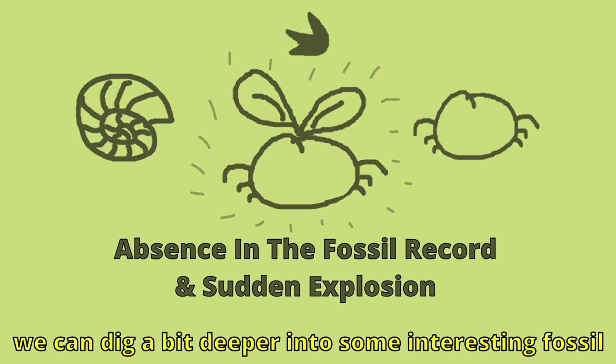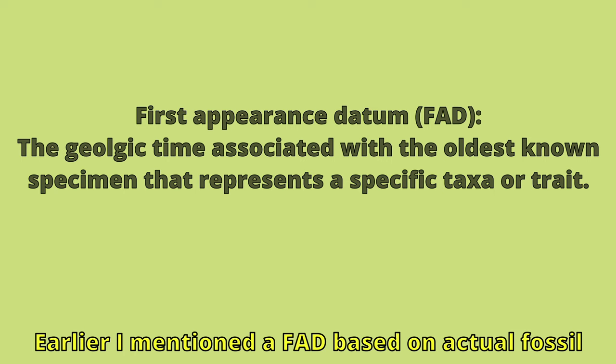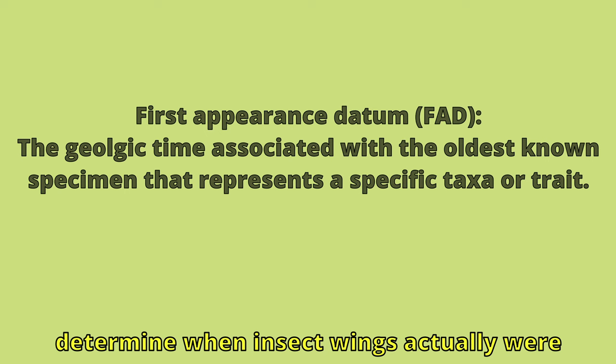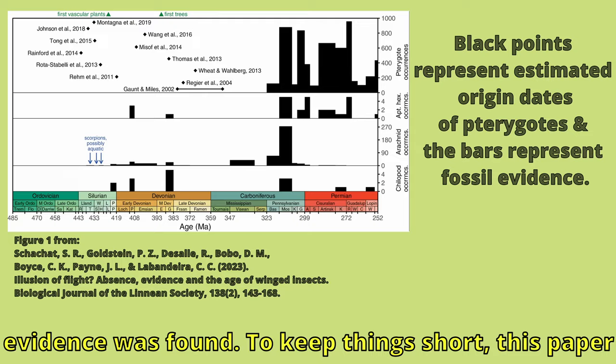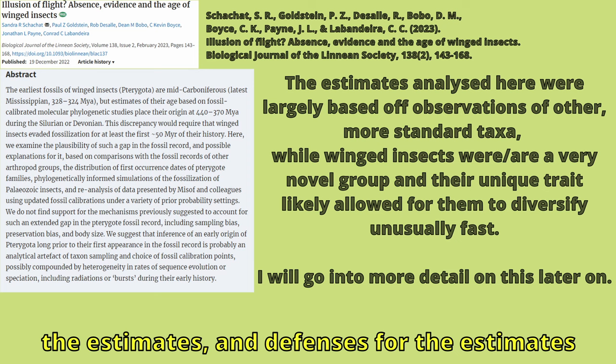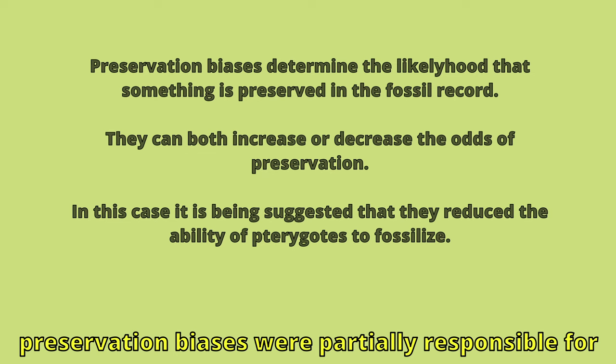Now that we are done with the preliminary stuff, we can dig a bit deeper into some interesting fossil characteristics of the Pterygota clade. I mentioned a first appearance datum based on actual fossil evidence. As is normally done, many estimates were based off fossil evidence to try and determine when insect wings actually were developed, as first appearance datums are statistically improbable to represent the first actual appearance of a trait or taxa. These estimates implied that Pterygota were present around 50 million years before fossil evidence was found. This paper states that these estimates are likely way off the mark due to outdated methods and unreliable defenses for those estimates.